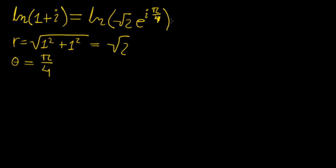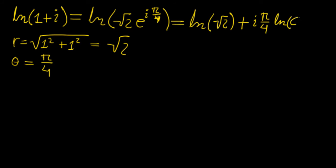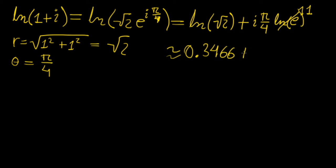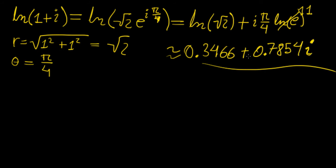By the properties of logarithms, when we have two values multiplying each other, we separate them. So we get ln(√2) + iπ/4 · ln(e), and ln(e) is just 1 because it's to the base e. So that gives us ln(√2) + iπ/4. That's the real part and the imaginary part — the exact form. We could write an approximate value: approximately 0.3466 + 0.7854i.